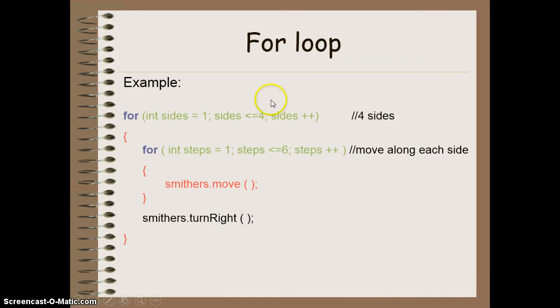So that code would look something like this. My outer loop says I want to do 4 sides. And then for each side, my inner loop would execute 6 steps. And after executing 6 steps, I would turn right so that I'm ready to do the next side in my square.